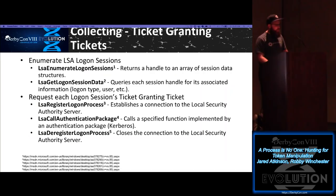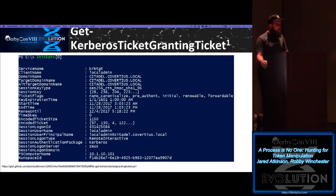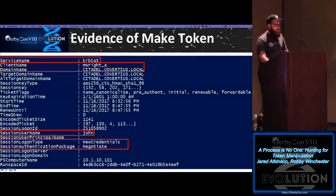For Kerberos ticket-granting tickets, we're going to enumerate the logon sessions — ticket-granting tickets are associated with every logon session performing Kerberos authentication. We have a Get-KerberosTicketGrantingTicket function which gives us information such as what type of ticket it is. KRBTGT indicates it's a ticket-granting ticket. We see the client local admin and the domain. Here's a benign ticket-granting ticket: a logon for local admin at Citadel, and a ticket for local admin at Citadel — which is what you'd expect. And here's a situation where we have a negotiate logon session for user john_local_user who's requesting a ticket for mike_wright_a at Citadel. Generally, you want to request a ticket for the user the logon session belongs to — if that's not the case, that might indicate something strange is going on.